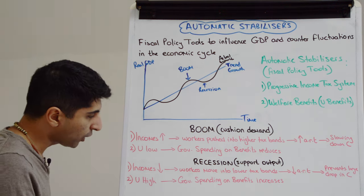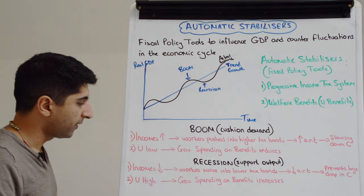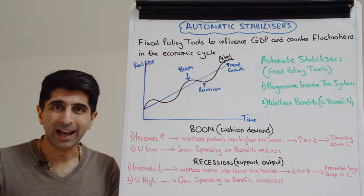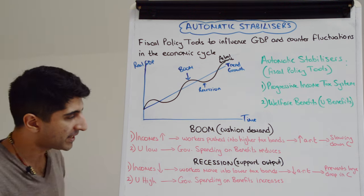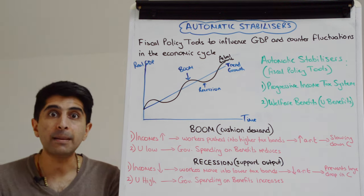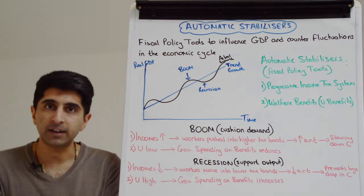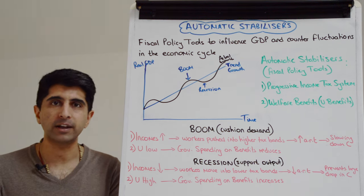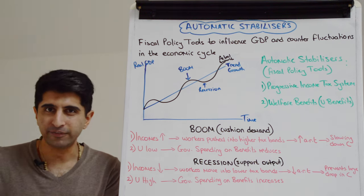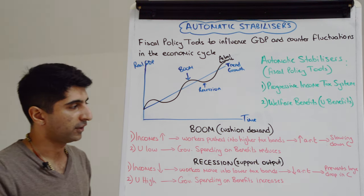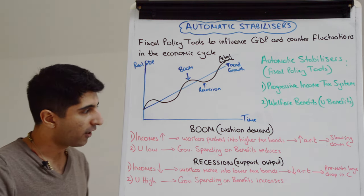We also know that in a recession unemployment is going to be higher, and therefore automatically government spending on unemployment benefits is going to increase. That's going to help prop up aggregate demand and prevent the really deep recession that we would get otherwise.